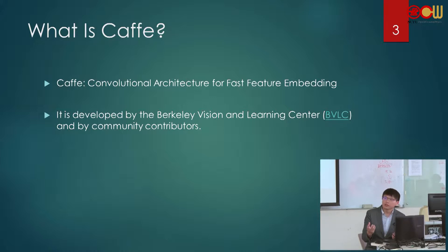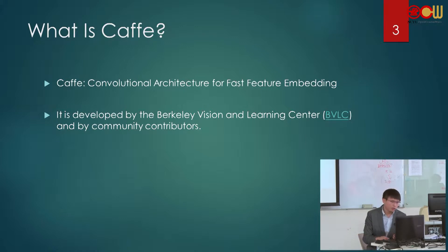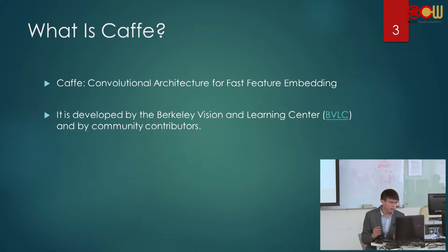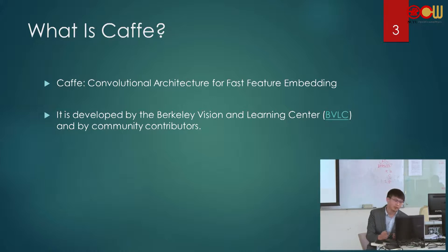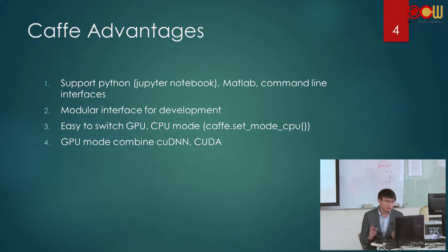When you want to train a neural network, you have to have training data and its labels, and most importantly you have to have a deep learning framework to operate the net. Caffe is developed by the Berkeley Vision and Learning Center (BVLC) and by some internet contributors. Why is Caffe easy to use?